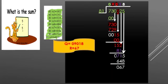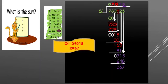Now bring down the last digit 5, making the number 715. 81 into 8 equals 648. We write 8 in the quotient and 648 below. Subtracting: 5 is smaller than 8, so we borrow — 15 minus 8 equals 7; the next digit becomes 0, which is smaller than 4, so we borrow again — 10 minus 4 equals 6; then 6 minus 6 is 0. The remainder is 67. So the final answer is: quotient equals 9018 and remainder is 67.